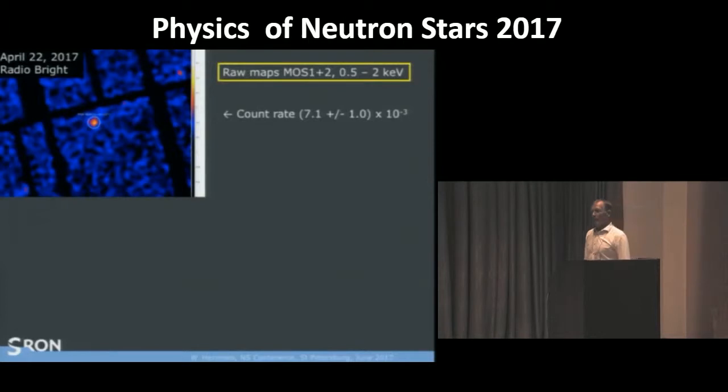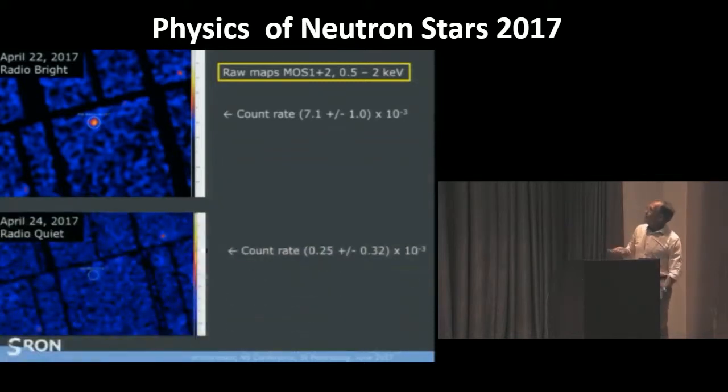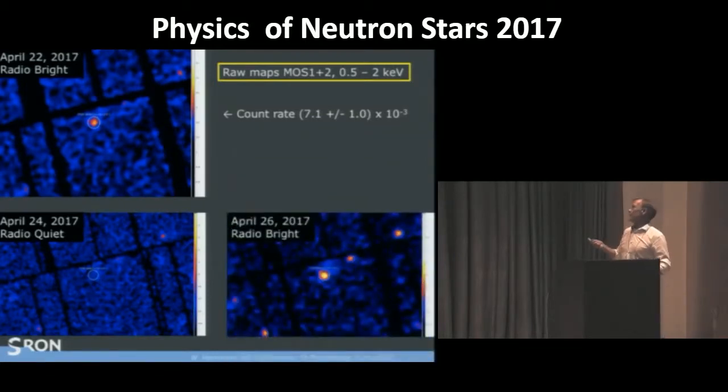And the later observations, again, they were always in the radio bright mode. So we had five observations in radio bright mode and one in Q mode. In the first and the second observation, we nicely detected the source. This is a raw map. But on April the 24th, when it was in the quiet mode, we did not see the source. And the count rate was consistent to zero. The next day, or the second day after, in the radio bright mode, we do see again the X-rays. And it was also the 28th and the 30th.